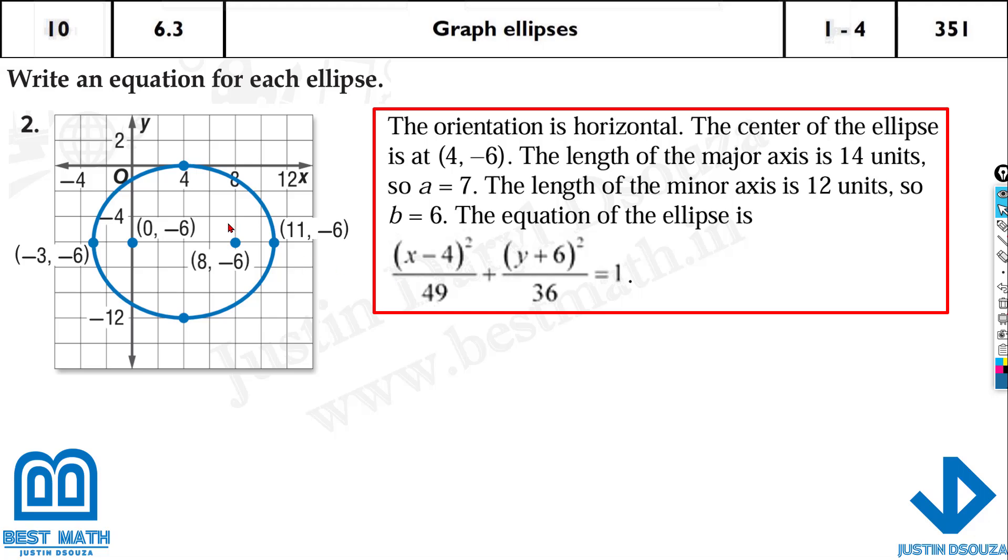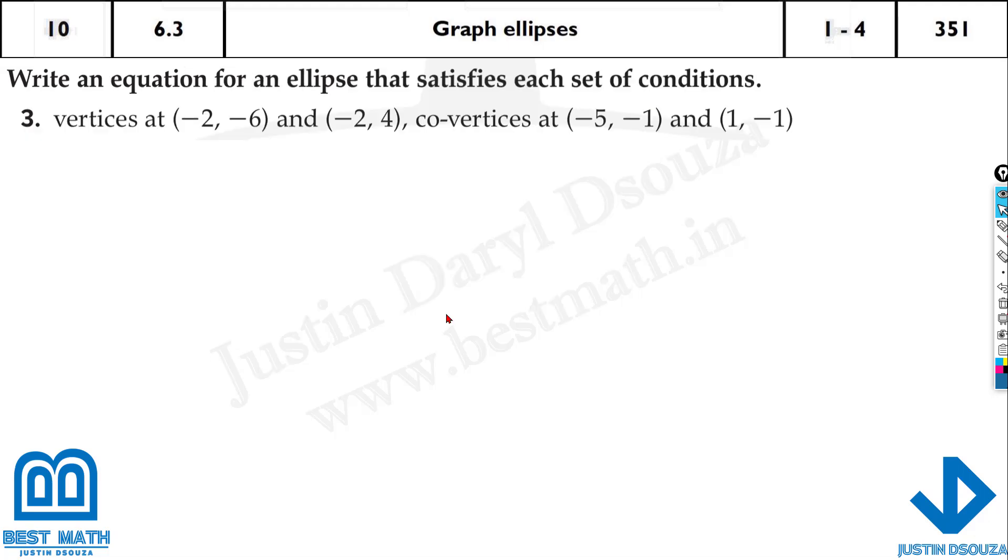The best part in the ellipses, always the vertex will be bigger than the co-vertex. But it is not the same in the hyperbolas. In hyperbolas, the a value or b value, whichever can be greater. But in ellipses, a is always greater than b. The vertices are always bigger than the co-vertices. Now let's look at this problem. Here they have told vertices so and so, co-vertices and so and so. But what if this was not given? They had just given graph only the points.